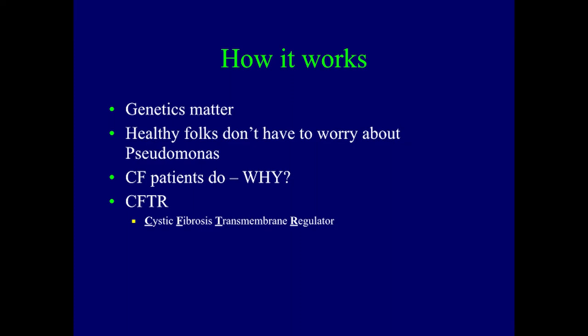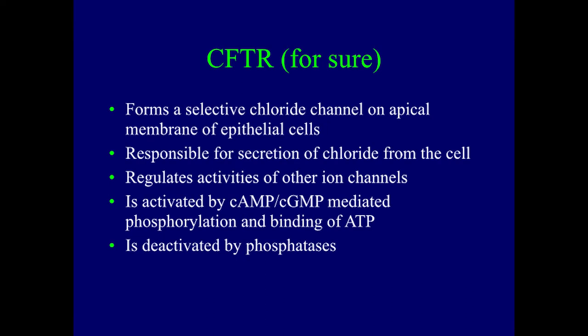Why is that? It is because they have changes in their cystic fibrosis gene, and that results in production problems for their CFTR. CFTR stands for Cystic Fibrosis Transmembrane Regulator Protein, and that is what's abnormal in people who have cystic fibrosis. CFTR forms a selective chloride channel on the apical membrane of epithelial cells within certain areas of the body — respiratory being a major one, including sinuses, nasal passageways, and airways, but also epithelial cells in the gut and genitourinary tract. It is responsible for secretion of chloride from the cell, and it regulates activities of other ion channels.